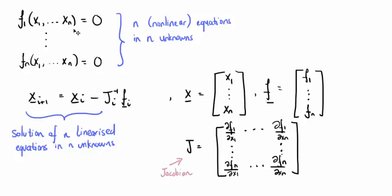In general, for a system of n equations in n unknowns, we obtain the iterative solution shown here, where x is the vector of variables, f is the vector of functions, j minus 1 denotes the inverse of the Jacobian matrix, and the subscript i refers to a valuation at the given point.